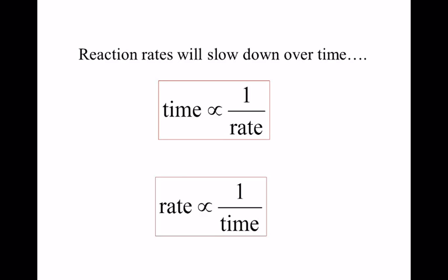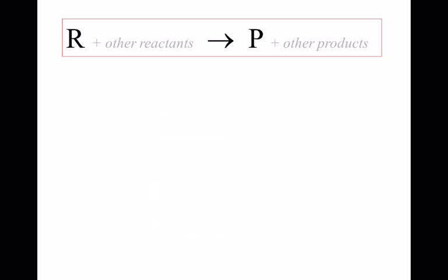Reaction rates slow down over time. So it's kind of weird, but when we talk about how fast a reaction is occurring — what's the rate of a reaction — it's always changing. We'll talk about instantaneous rates, rate averages, and rates at a particular point. So, reactants go to form products.